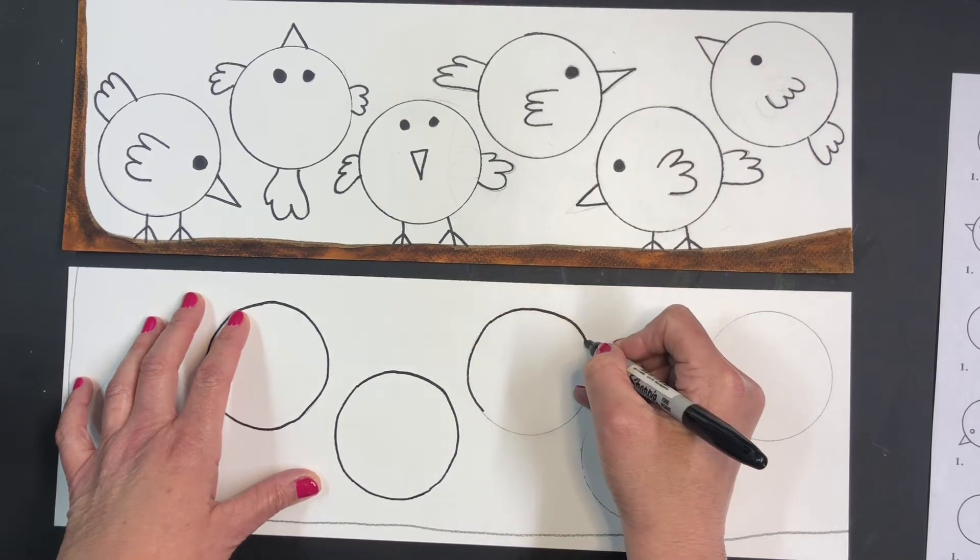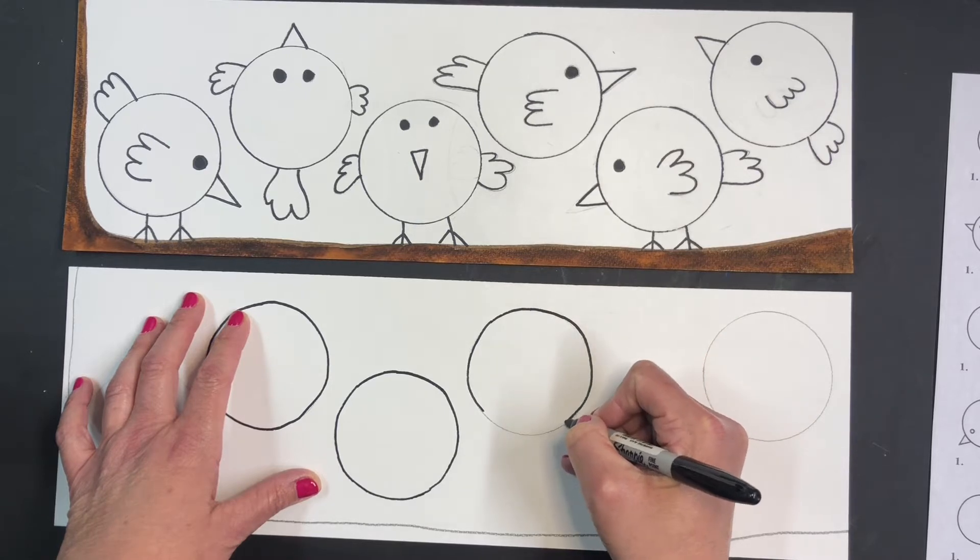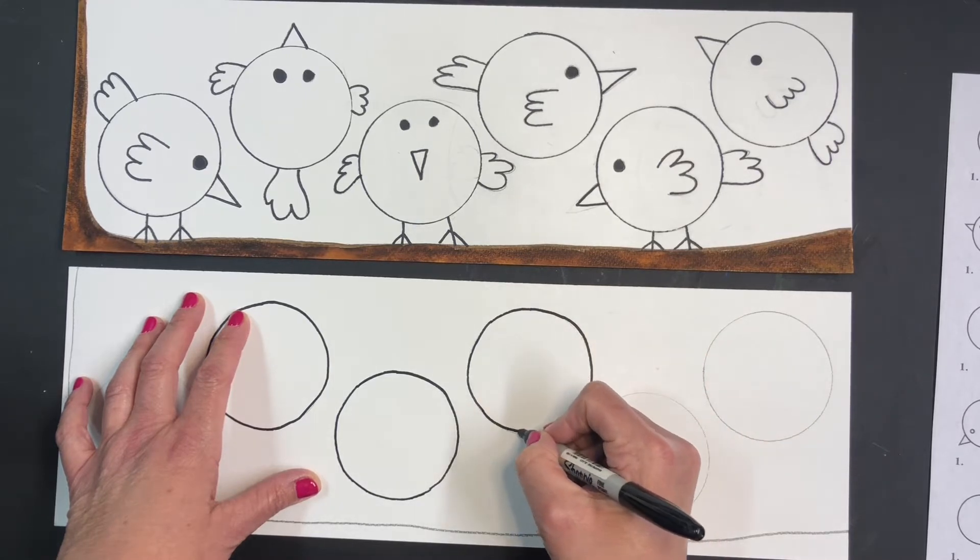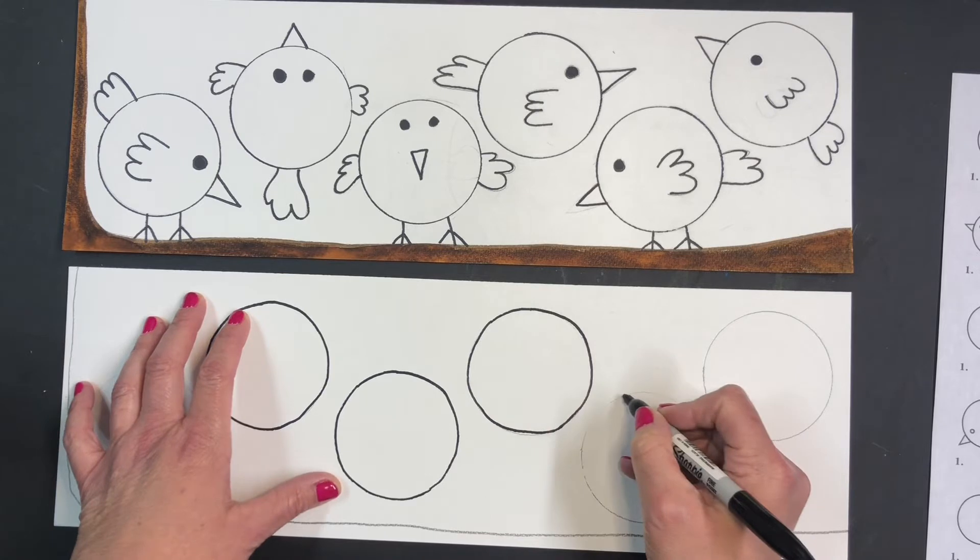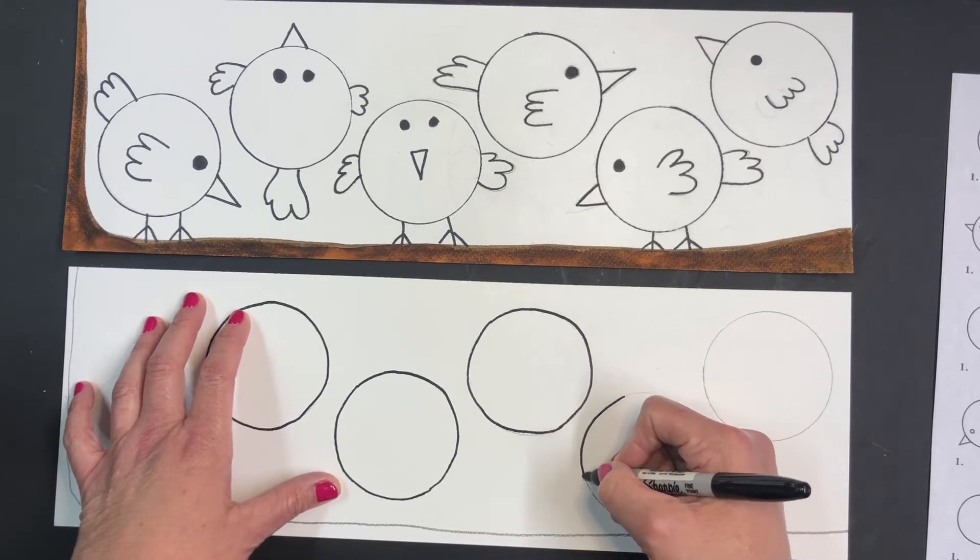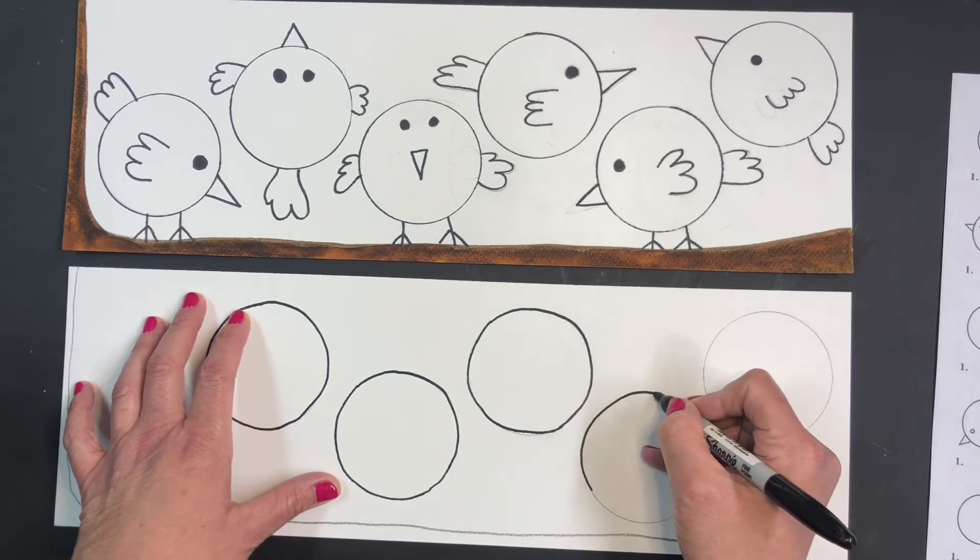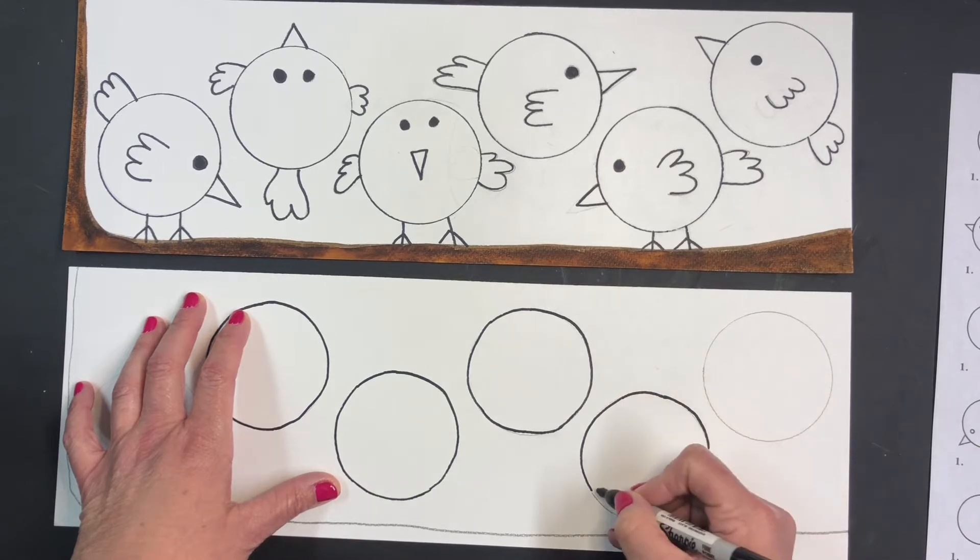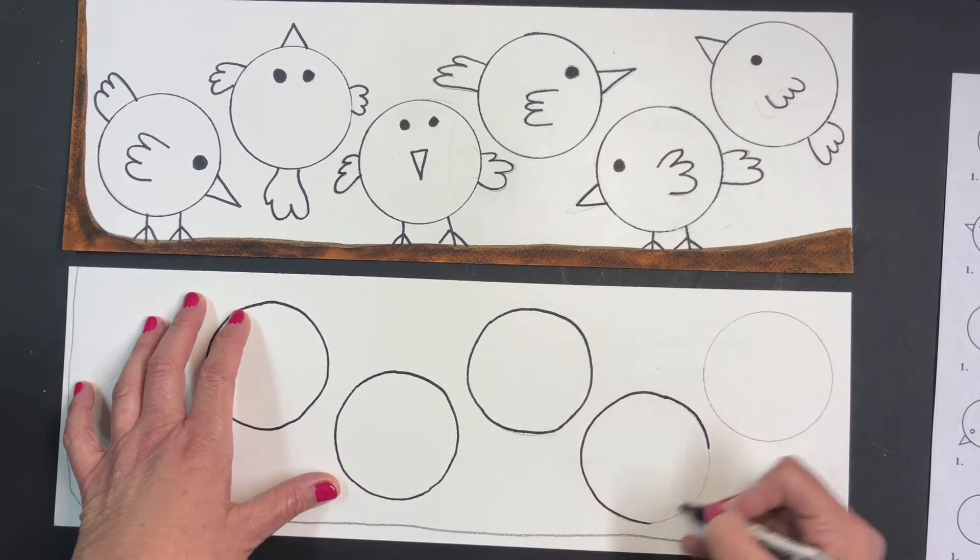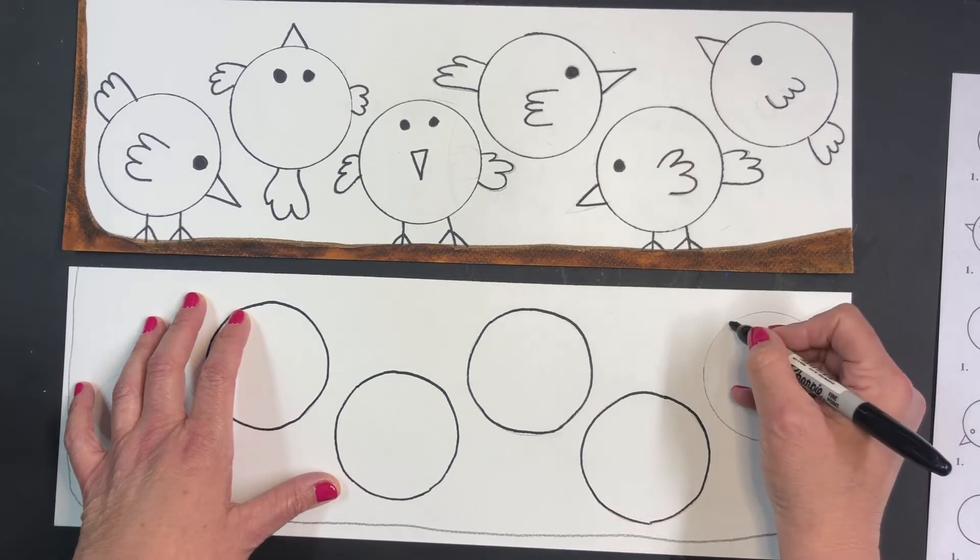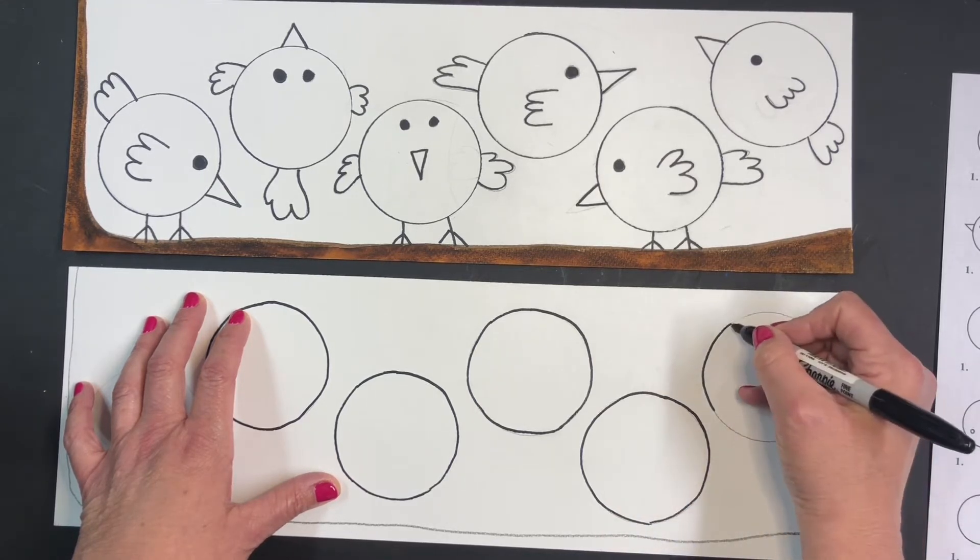We're basically turning circles into birds. And what's really fun is depending on where you place your circle is going to help you figure out if you're going to have your bird standing on the branch or flying in the air. And I'm going to just do a similar setup of what I have up here. I want you to come up with your own, but I'm just going to show you what I did here.